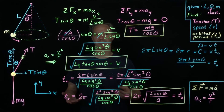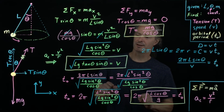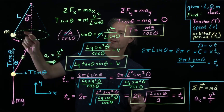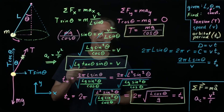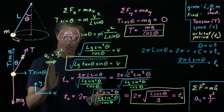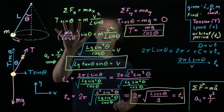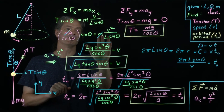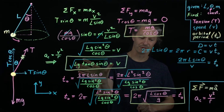An interesting feature: while the tension depends on mass, the orbital speed and orbital period do not — there is no m in those expressions. They depend on length L, gravitational acceleration g, and angle theta, but not mass. This is because the tension is proportional to mass, so when we write T sinθ = m·(v²/r), mass appears as a multiplicative constant on both sides and simply cancels out. That's why mass doesn't appear in the expressions for orbital speed or orbital period.